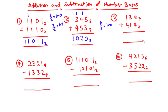For the third example, we are working in base 7. 6 plus 4 is 10; 10 divided by 7 is 1 remainder 3, so we write 3 and carry 1. Then 1 plus 3 is 4, 4 plus 1 is 5 — 5 is less than 7, so we write 5. Then 1 plus 4 is also 5. Now let's move on to subtraction.